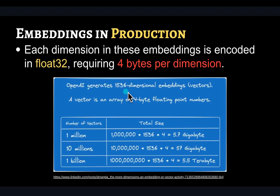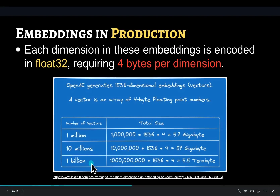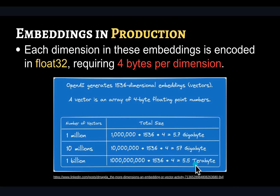OpenAI generates 1536-dimension embeddings for each vector. Usually they are computed in 32-bit floating point precision, which means each dimension is going to need four bytes of storage. So if you are looking at storing 1 million vectors, you are going to need about 5.7 gigabytes. If you are storing 1 billion chunks, that means you will need 5.5 terabytes of storage, which is a substantial amount.